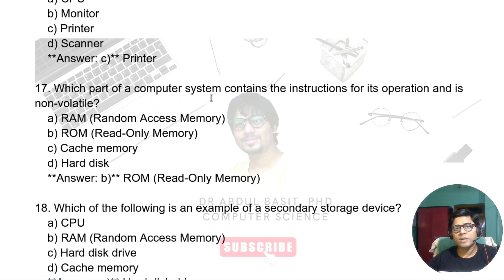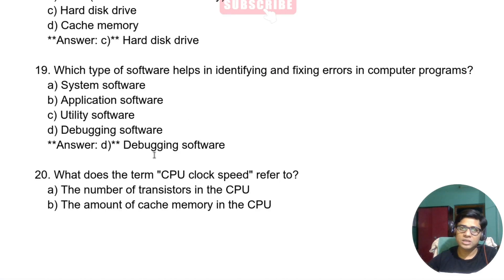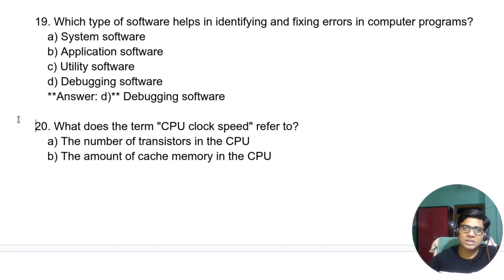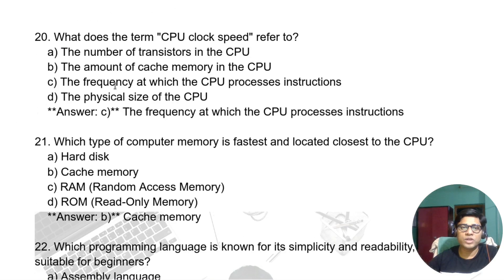Which part of the computer system contains the instructions for operation and is non-volatile? The answer is non-volatile memory, which is ROM. Which type of software helps in identifying and fixing errors in a computer program? The answer is debugging software.